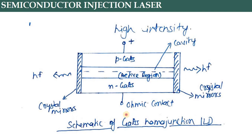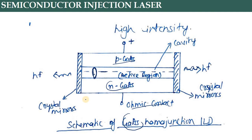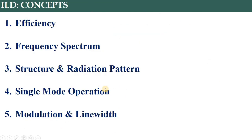Diagram देखें तो एक normal schematic diagram for gallium arsenide homo-junction ILD के लिए: N-type GaAs and P-type gallium arsenide दिखाया है। यहाँ एक mirror है - यह Fabry-Perot cavity है। High intensity output हमें मिलती है, और यह ohmic contacts हैं। बीच का junction है - यही active region कहलाता है, यहीं से light output होती है। These are the crystal mirrors to make the cavity for feedback and amplification। यह पूरा process basic concept है, बस semiconductor के form में दिखाया है।